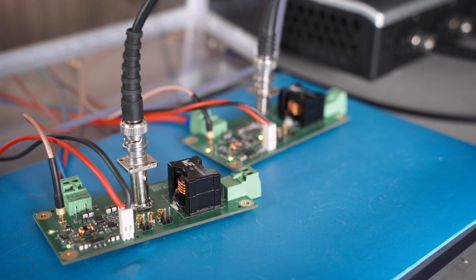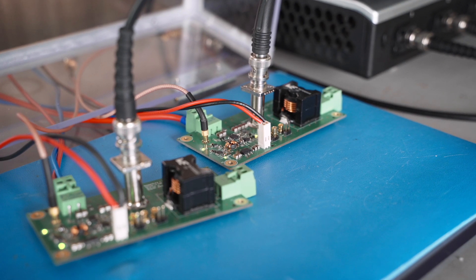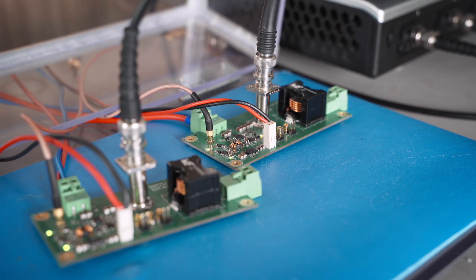For this benchmark we compare a 3 amp SiGe versus a 3 amp Schottky diode. First we measure the reverse recovery performance in a double pulse configuration and afterwards the impact on efficiency in a DC-DC converter.